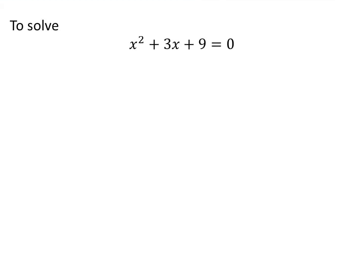The given quadratic equation is x² + 3x + 9 = 0.